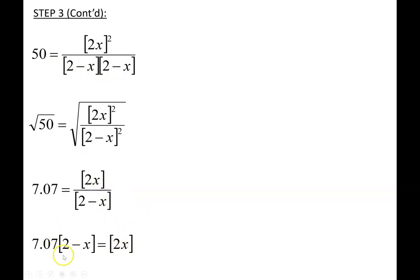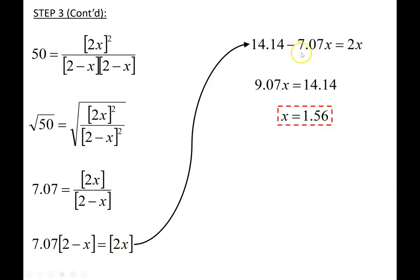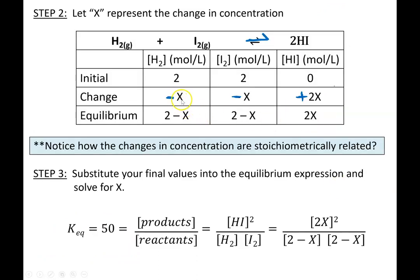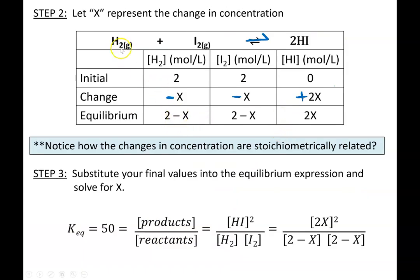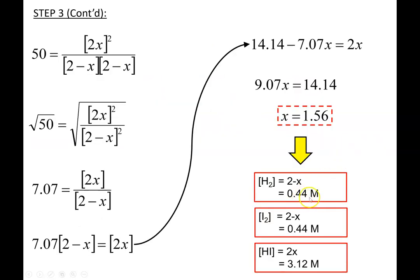Moving forward, I expand the equation, collect like terms, and solve for x. Remember, x is not the final answer — we are finding the equilibrium concentrations: 2−x for hydrogen, 2−x for iodine, and 2x for hydrogen iodide. This gives 0.44 moles per liter for hydrogen gas, 0.44 moles per liter for iodine gas, and 3.12 moles per liter for hydrogen iodide at equilibrium.